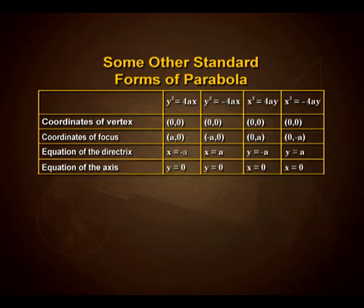The equation of the axis for four different parabolas: for y² = 4ax, the axis is y = 0. For y² = −4ax, the axis is also y = 0. For x² = 4ay, the axis is x = 0, and similarly for x² = −4ay the axis is x = 0.